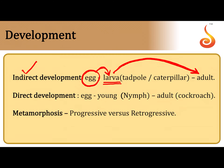In direct development, there is no larval stage. The egg hatches out into a young one, which may be considered a nymph. For example, when a human baby is born from the mother's womb, it simply resembles the adult, then grows in body size, body proportions, and mass to later become an adult. There is no larval stage at all. This kind of development where the larval stage is completely absent is called direct development.